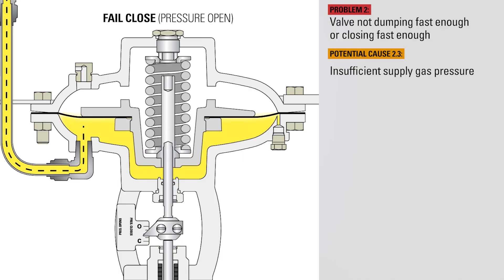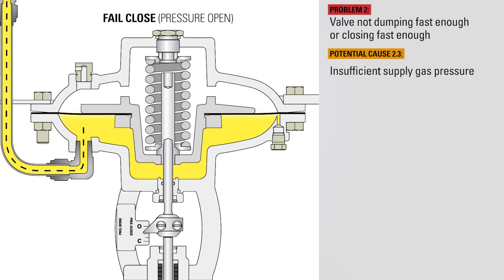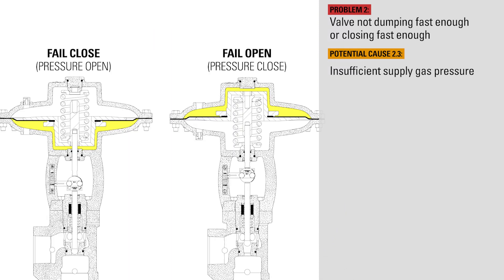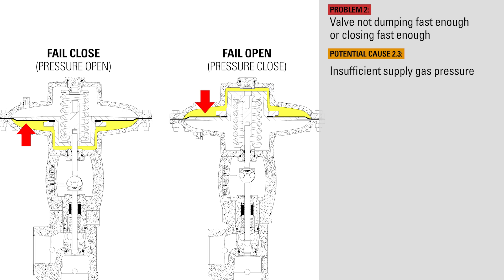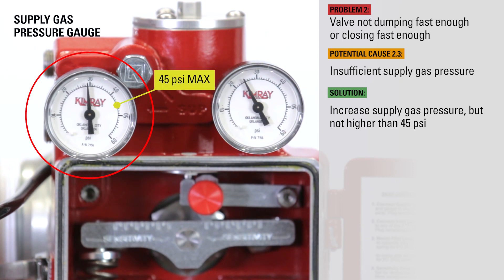If the pressure of the supply gas is too low, it may not be able to create sufficient force in the actuator to open the valve fully in a fail closed valve, or to close the valve fully in a fail open valve. Try increasing the supply gas pressure to see if that fixes the issue. Make sure not to adjust the pressure higher than 45 psi, which is the maximum allowable for the Gen 3 pilot. Pressures above that could potentially rupture the diaphragms inside the pilot.